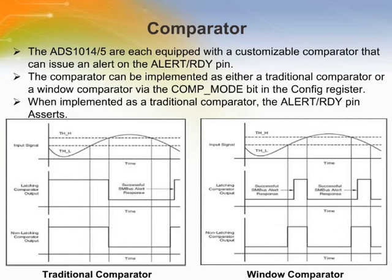The ADS1014 and 1015 are each equipped with a customizable comparator that can issue an alert on the alert/ready pin. In either window or traditional comparator mode, the comparator can be configured to latch once asserted by the COMP_LAT bit in the configuration register. This latched assertion can be cleared by using an SMBus alert response or by reading the conversion register. The COMP_POL bit in the configuration register configures the alert/ready pin as active high or active low.